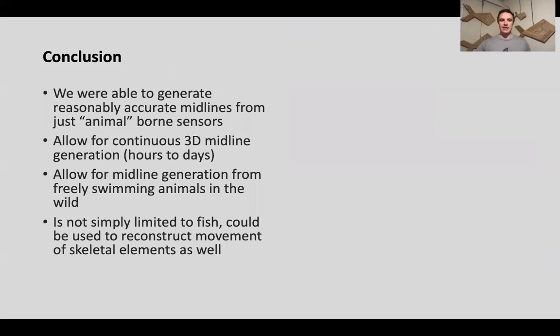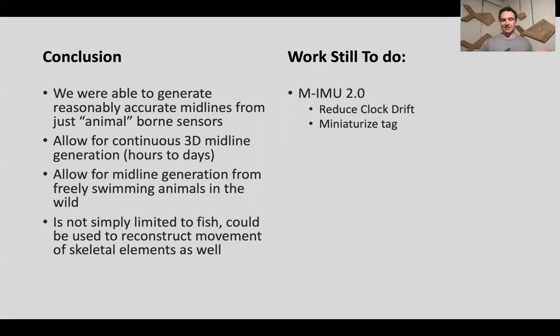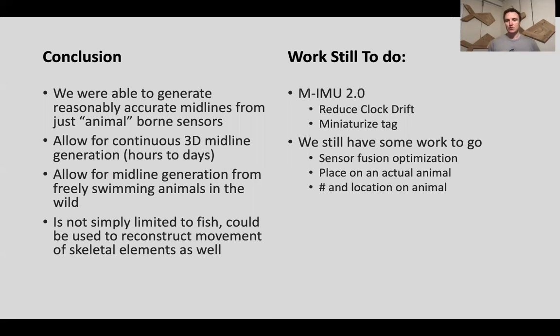But just to wrap it up, in conclusion, we're able to actually generate pretty accurate and reasonable midline kinematics from just animal-borne sensors. This will allow for continuous midline generation on the scale of hours to days and allow us to do it on animals in the wild that we're not visually seeing. This method isn't limited just to fish. You could put these same sensor networks on dogs or horses and estimate running gait, which I think would be a really neat thing to do. But we still have a ton of work to do. We're doing MIMU 2.0 to work on clock drift and make the tag smaller. We still have work to do with some sensor fusion optimization, as well as what's the optimal number and location of sensors to put on the animal.